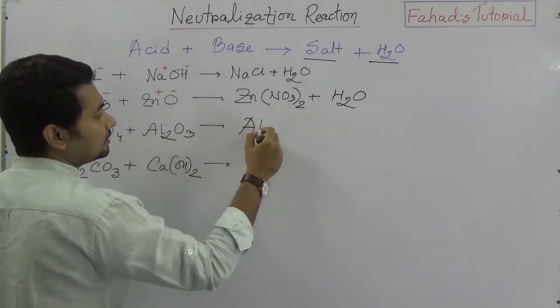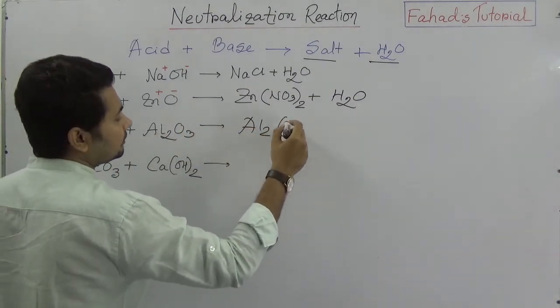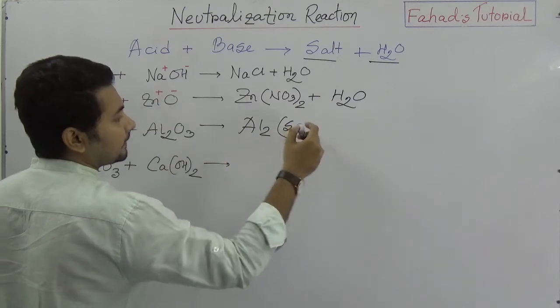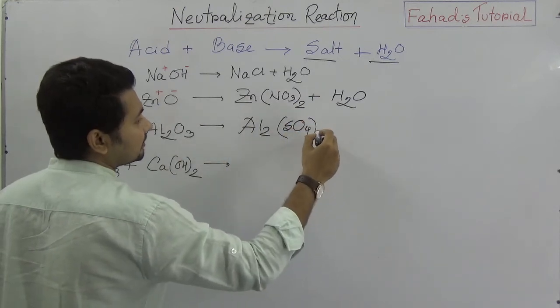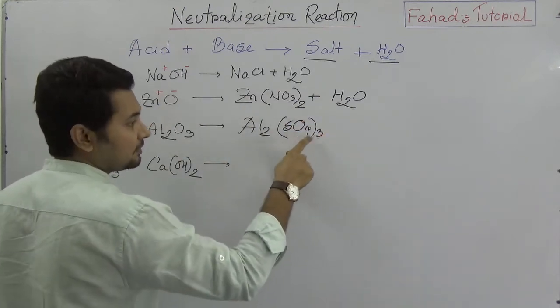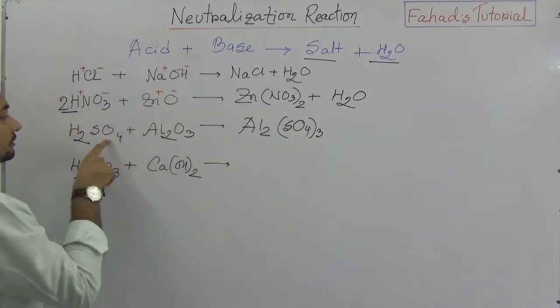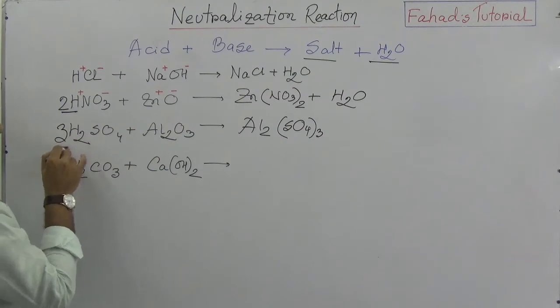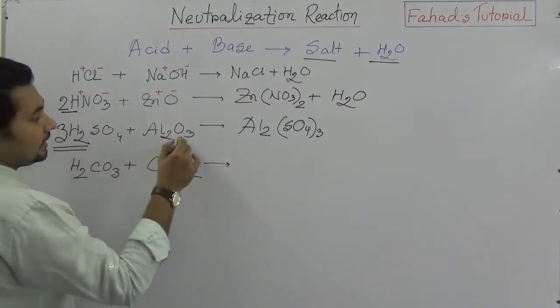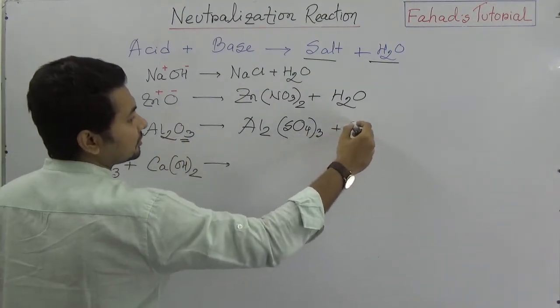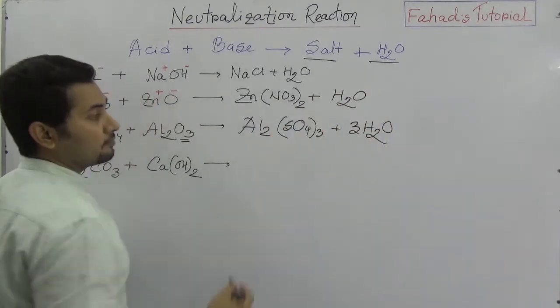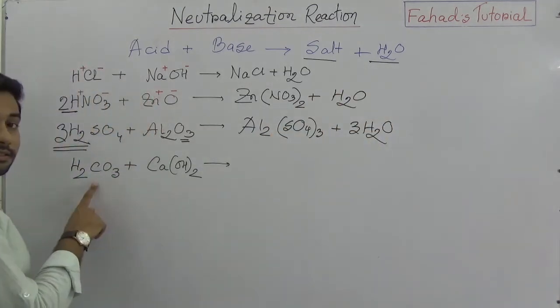Aluminum sulfate, the formula is Al2(SO4)3. So sulfate would be 3. Here the sulfate is only 1, so if you think 3, there are 6 hydrogen and 3 oxygen that will produce 3 molecules of water.